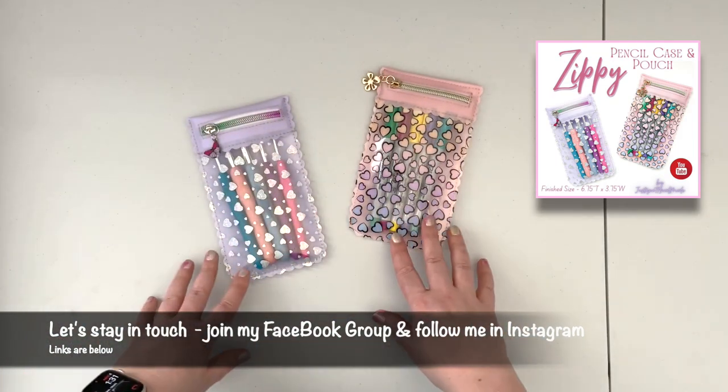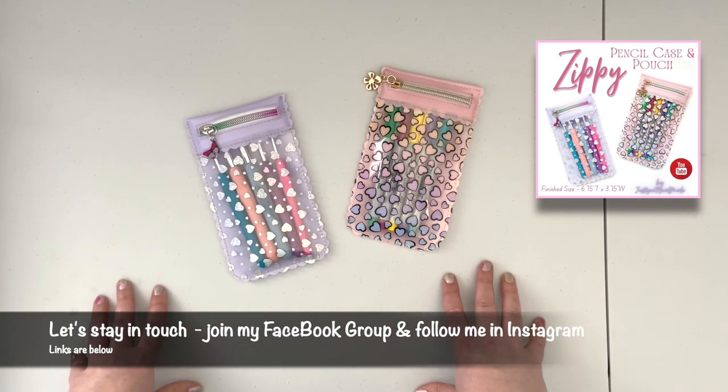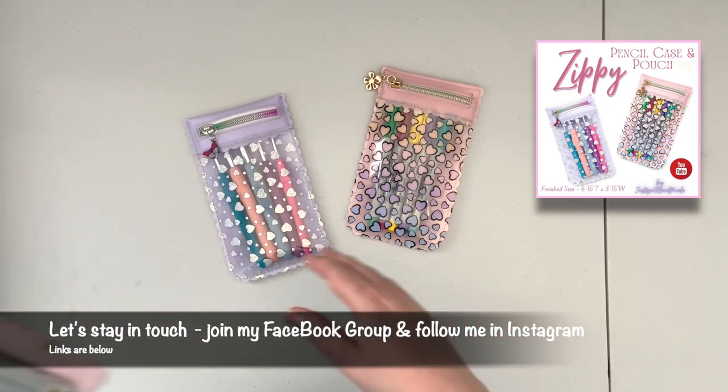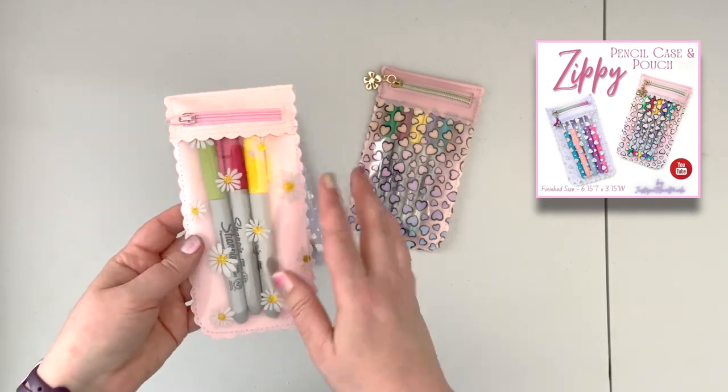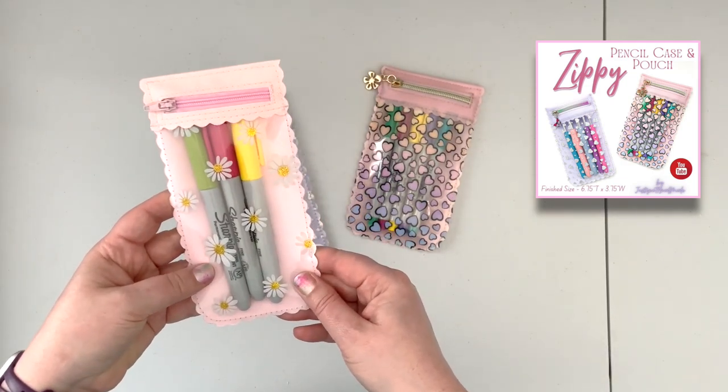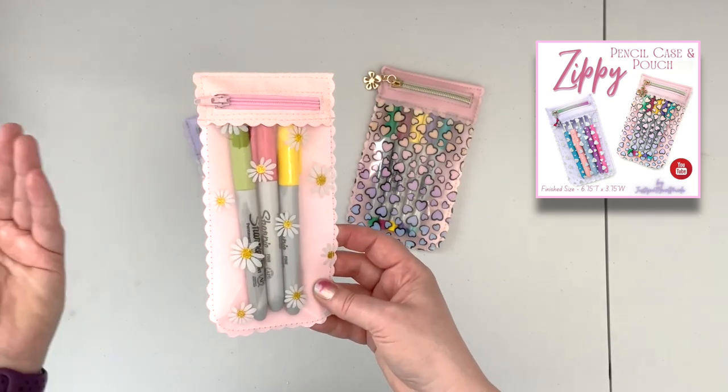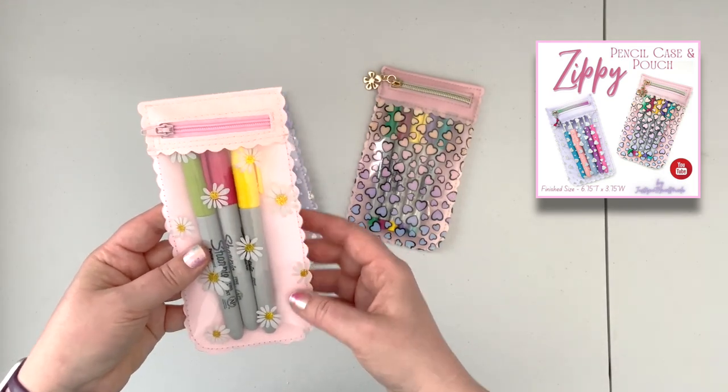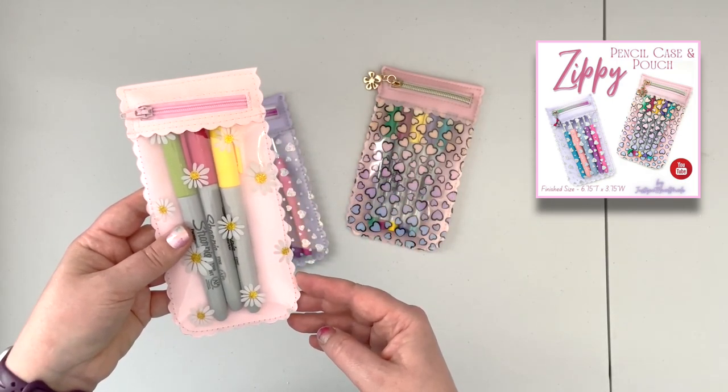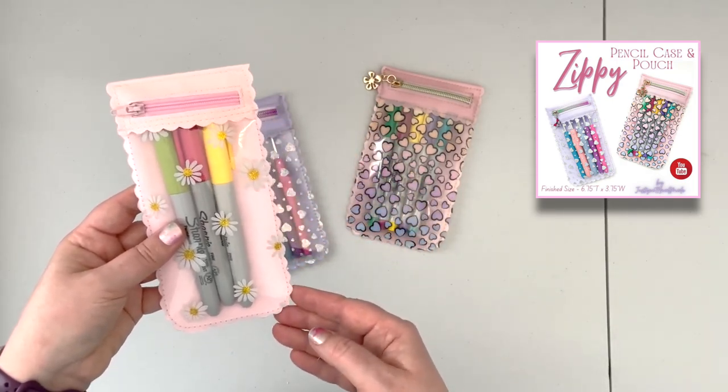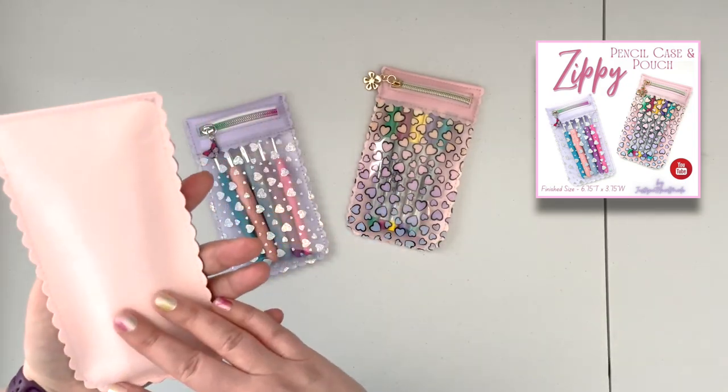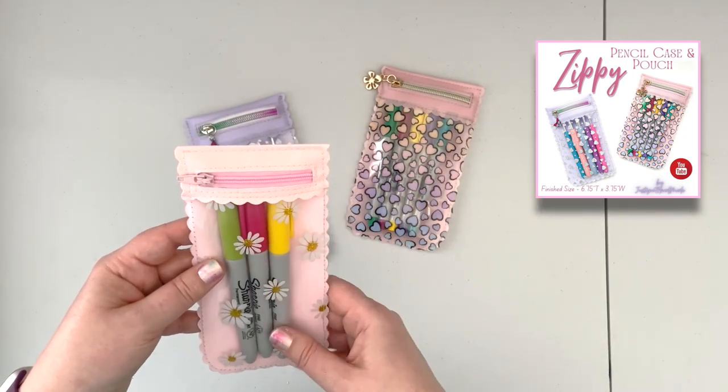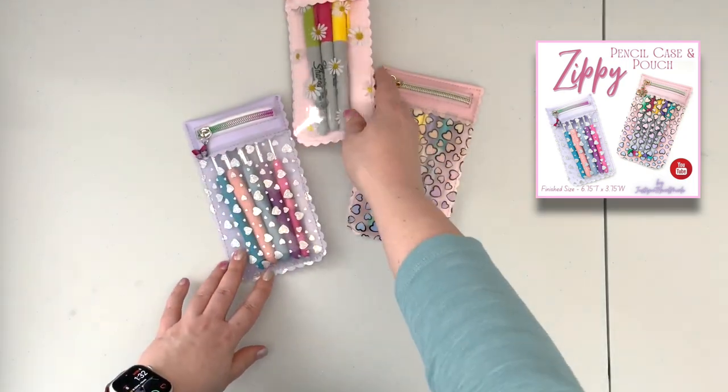But if you don't have the jelly vinyl or you are not convinced if you are up for working with it, you can use just a waterproof canvas. That's what I did on my little test project. The waterproof canvas works perfectly. Just after the final trim, I quickly zapped the cut edges with my lighter and it seems to be working just fine. Definitely the waterproof canvas is way easier to work with.